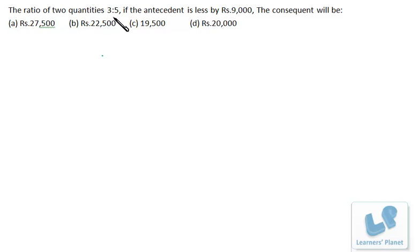The ratio of two quantities is 3 to 5. If the antecedent is less by 9000, the consequent will be.